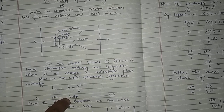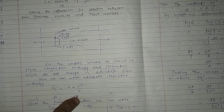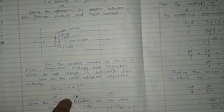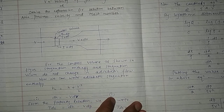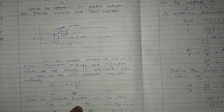dH_s equals to d(V²/2). When we differentiate the equation, we can write it. From the property relation — the TDS equation — T·dS equals dH minus V·dP.